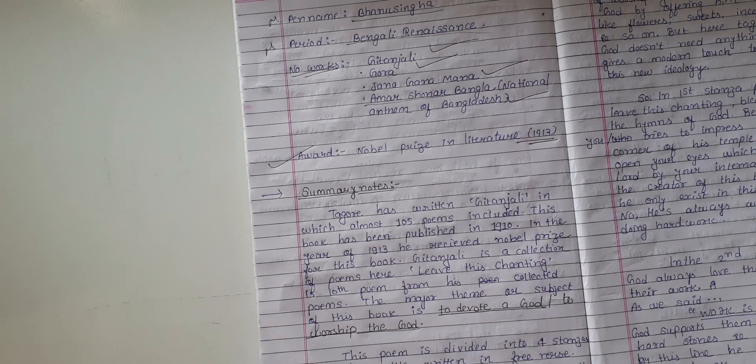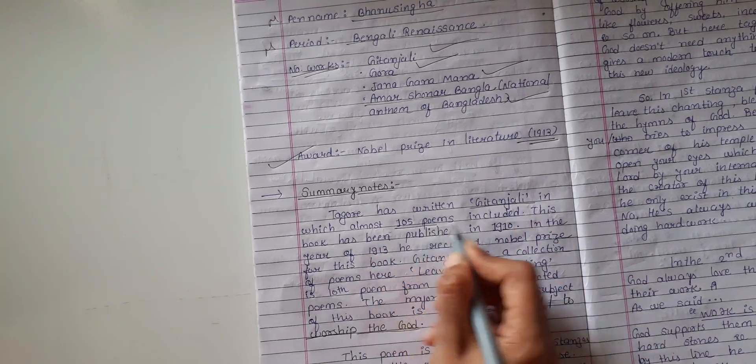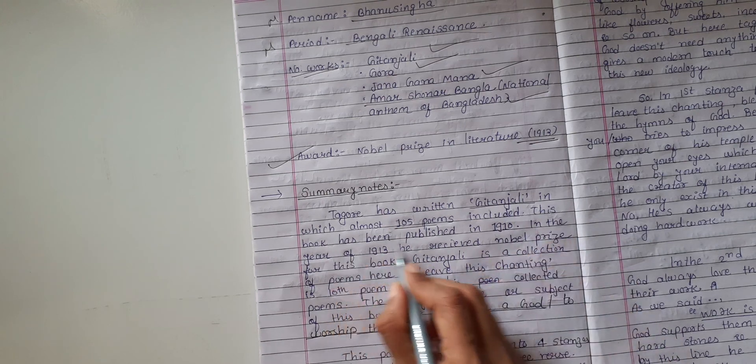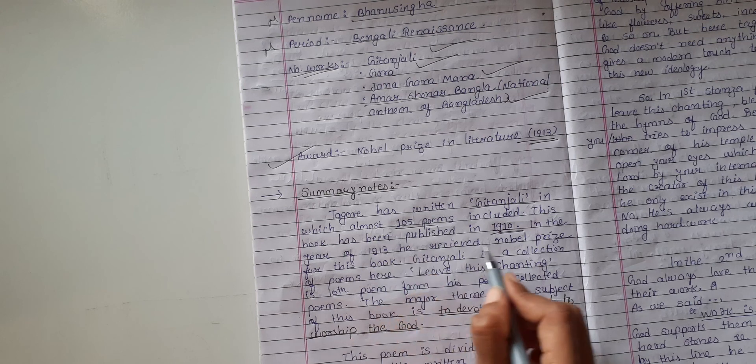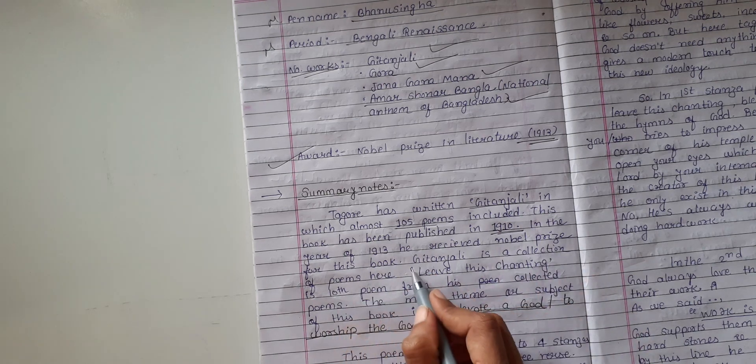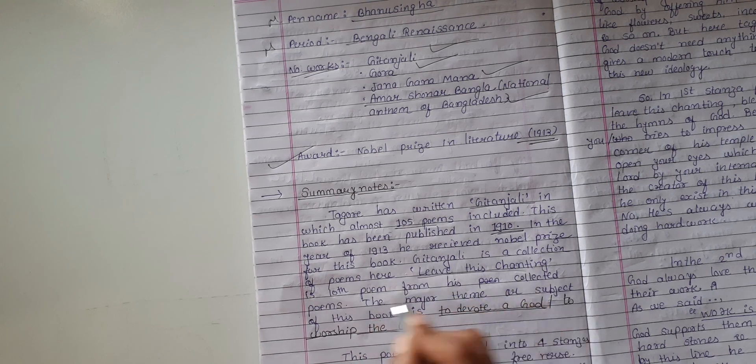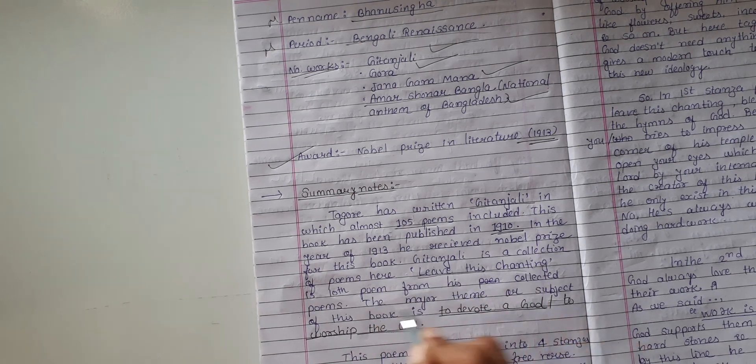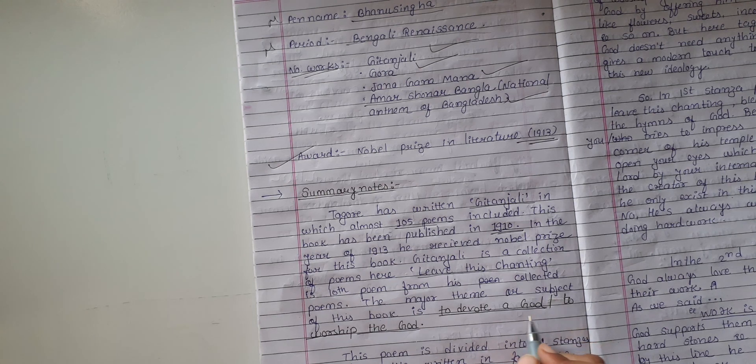Summary notes: Tagore has written Gitanjali, in which almost 103 poems are included. This book was published in 1910. In the year of 1913, he received a Nobel Prize for this book. Gitanjali is a collection of poems. Here Leave This Chanting is the 11th poem from his collected poems. The major theme or subject of this book is to devote to God.